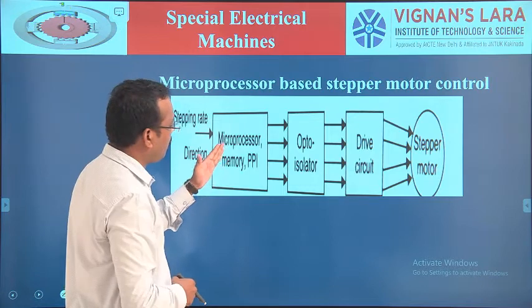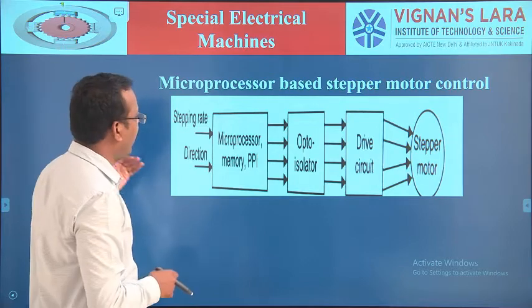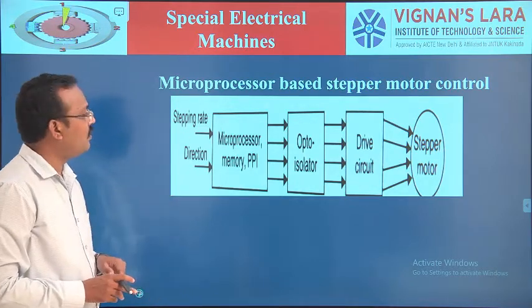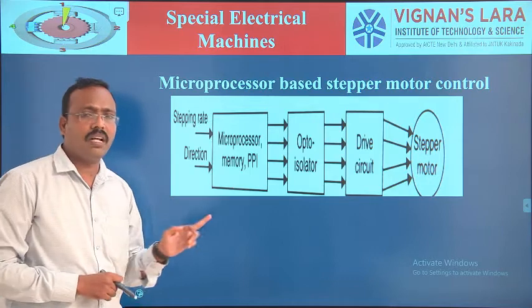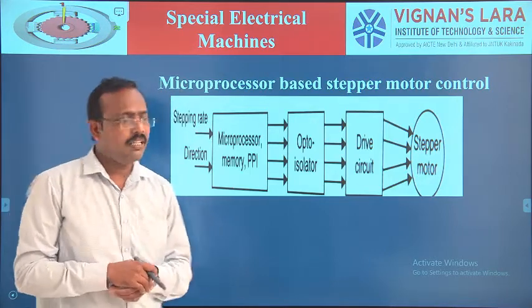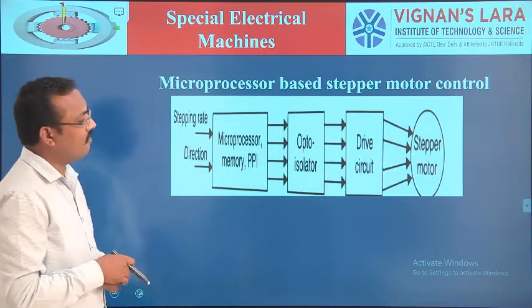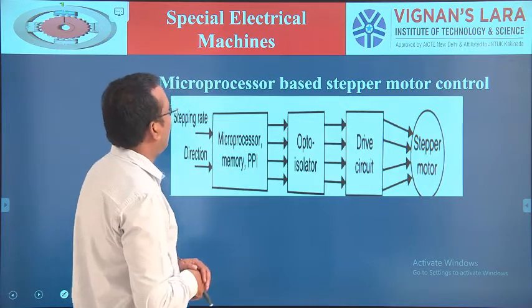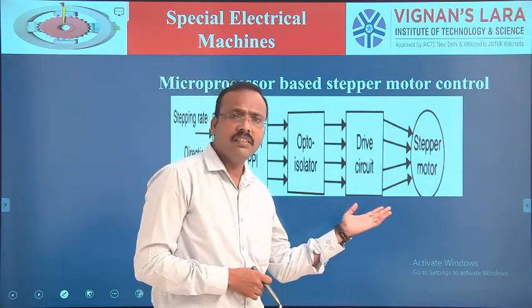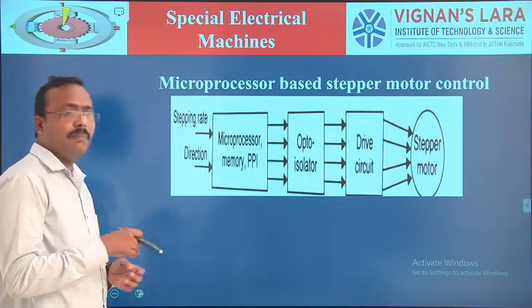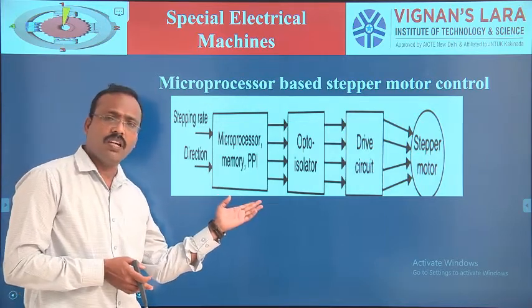Next is the microprocessor memory and program. The stepping rate is given as input to the microprocessor. The direction of the stepper motor is also input, which decides whether the motor runs in clockwise or anticlockwise direction. This direction indicates the excitation sequence of the windings. This stepper motor operates in open-loop configuration, offering high torque at zero speed or low speed with open-loop mode control strategy.